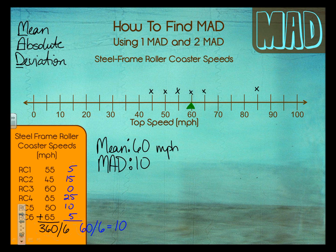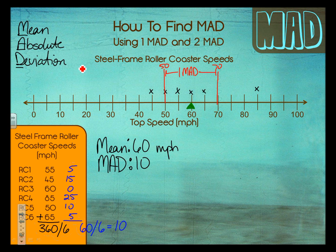Now comes the fun part. MAD is 10, and I have one MAD and two MADs. What this means is your average deviation is 10 — my mean absolute deviation is 10. So that means I can go 10 above to 70, or 10 below to 50. That is within one MAD. So 10 above or 10 below — that is the range of one MAD.